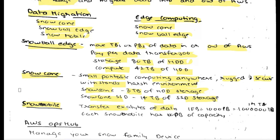What is Snow Mobile? Snow Mobile transfers exabytes of data. It is basically a big truck. One exabyte is equal to one thousand petabytes, and one thousand petabytes means one million terabytes. Each Snow Mobile has 100 petabytes of capacity. You can order Snow Mobile through AWS — they will provide the truck.